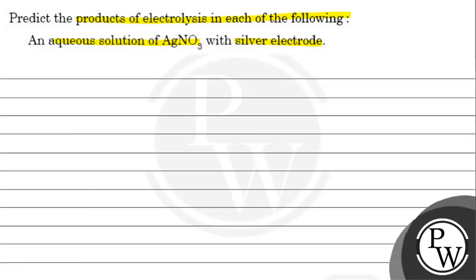This is our question. We will write the key concept. What is the key concept? Electrolysis is the process of passing current